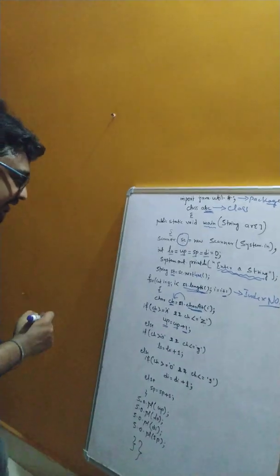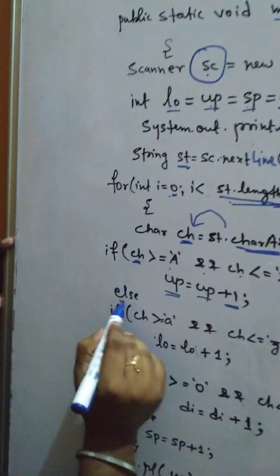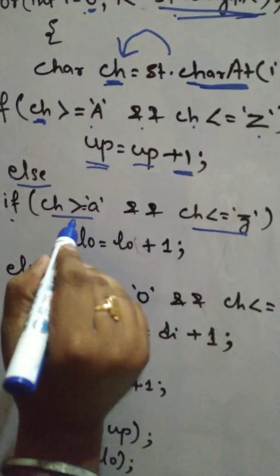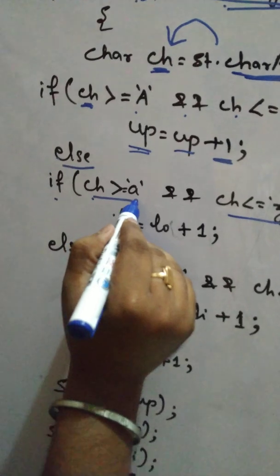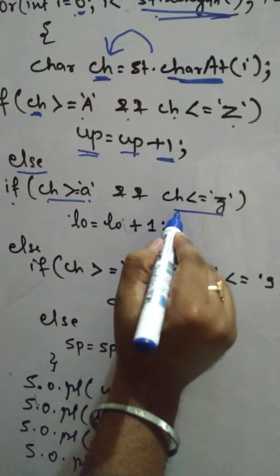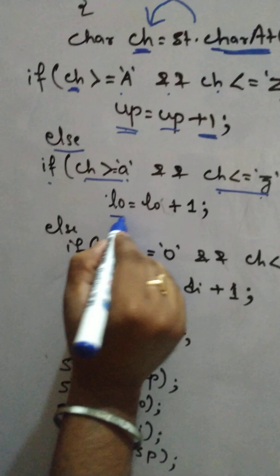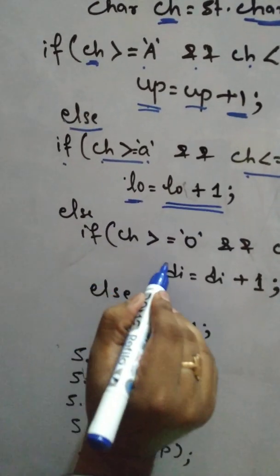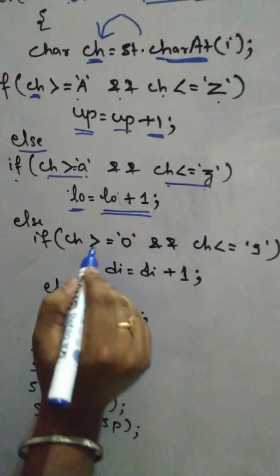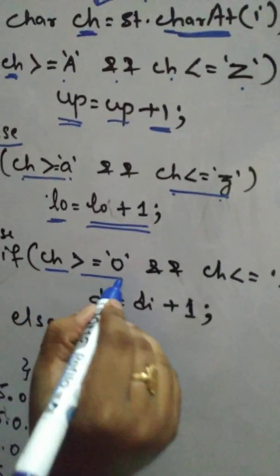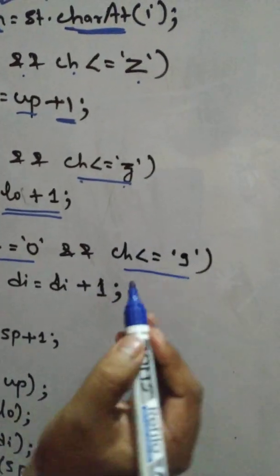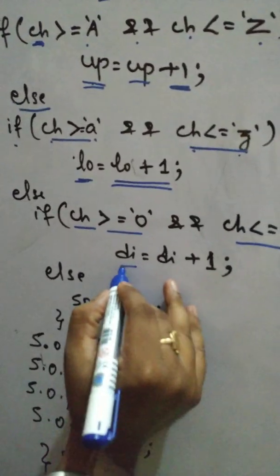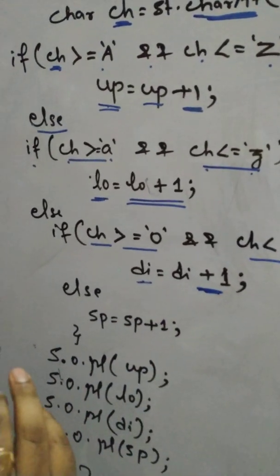Now the same thing I did. If you see else part, and thereafter, again if I use, and this is for the checking of small letter. Character must be greater than equals to small a. Character must be less than equals to small z. The value of LO will be increased by 1. Again, I am checking for digits. That is, character is greater than equals to 0 and less than equals to 9. All digits are coming in between 0 to 9. So, that digits will be DI variable will be increased by 1.